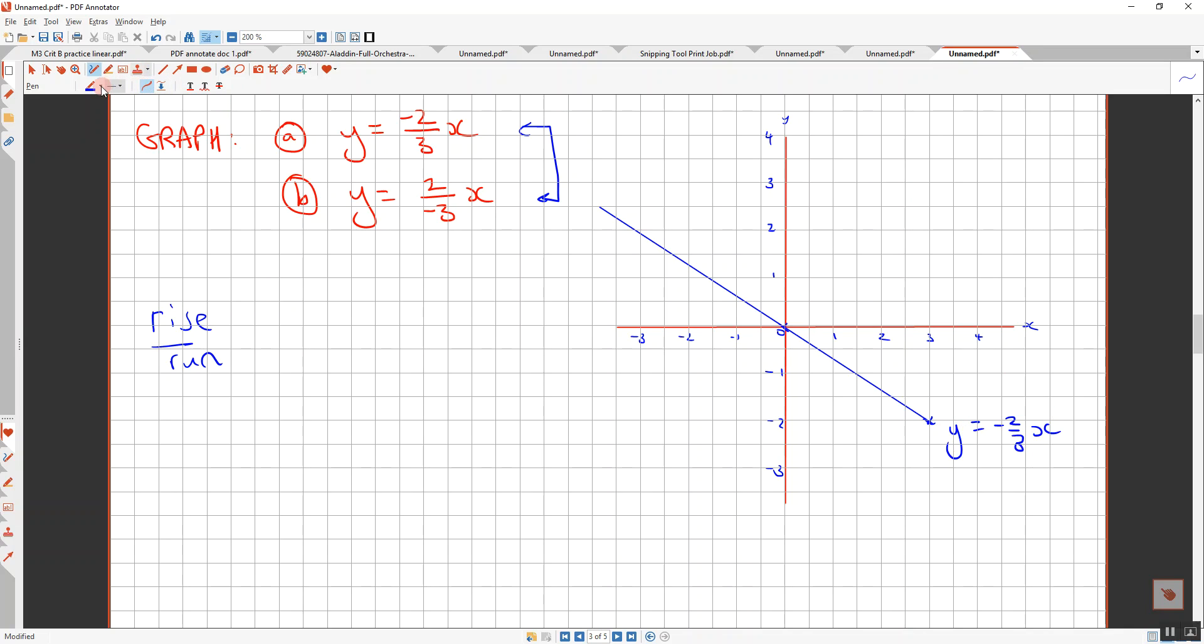Now the other one, I'll do in a different color. It is two over negative three, so I go across two, and then down three. Sorry, what's... Negative two. Which one did I do first there? I did this one. Negative two over three.